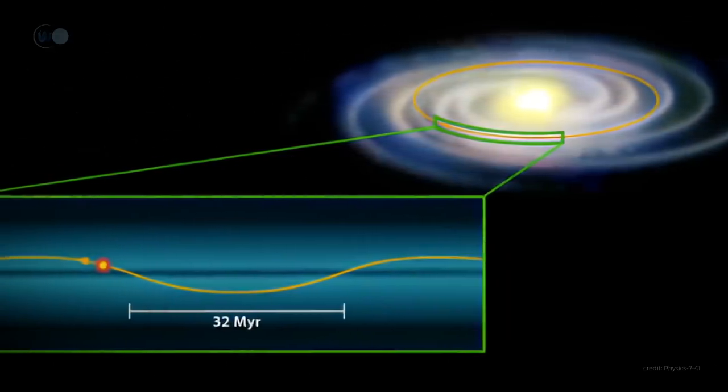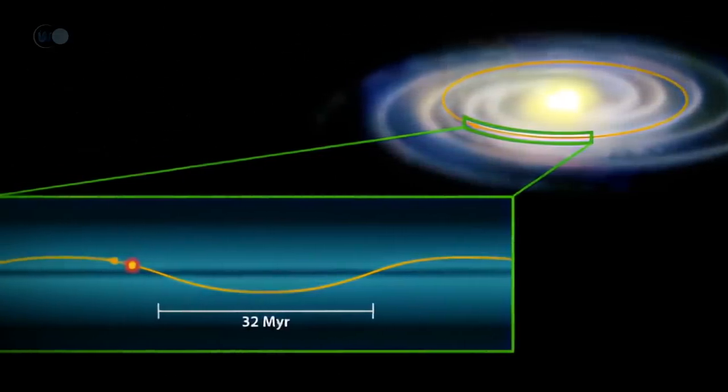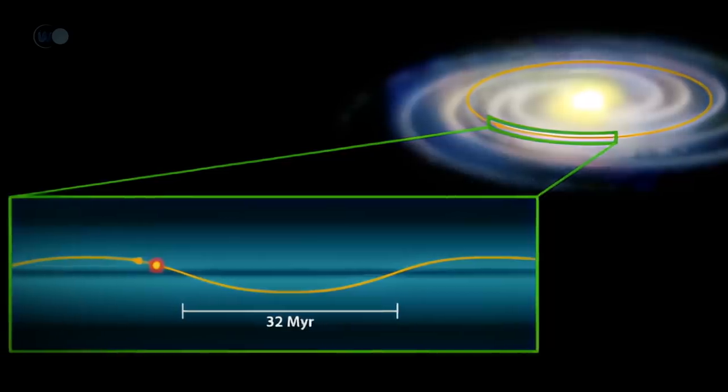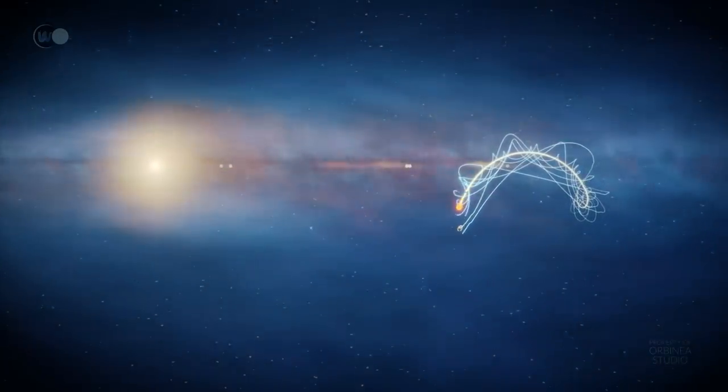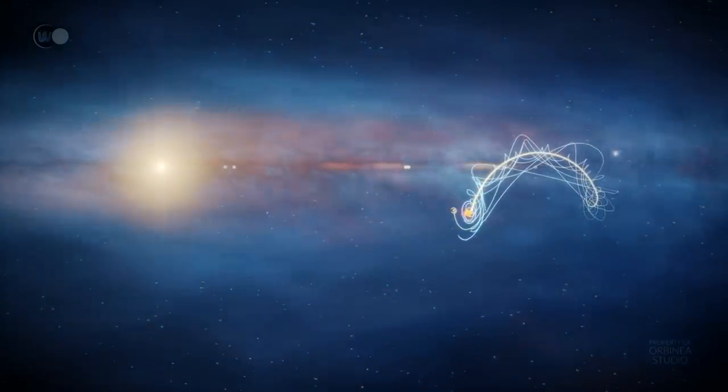According to their estimates, not only did we cross it for the last time around 3 million years ago, but we won't do so again not for more than 30 million years.